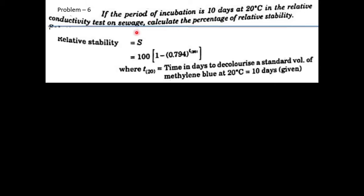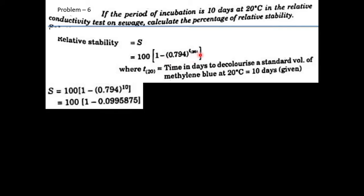Problem: If the period of incubation is 10 days at 20°C in the relative stability test, calculate the percentage of relative stability. Using the first equation for T20: S = 100 × (1 − 0.794^10) = 100 × (1 − 0.794^10) = 90.04%.